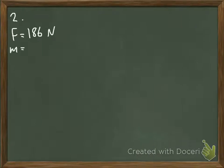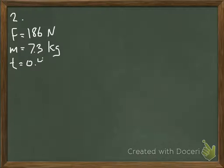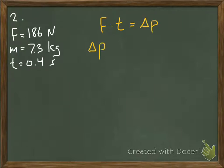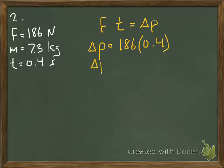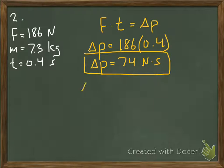Question number two. We are given the force that acts on a bowling ball, the mass of the bowling ball, and the time that it takes for the force to act on the bowling ball. The question is: what is the change in momentum? We can use a similar equation to question one, substituting MVF minus MVI for change in momentum, because that's the definition of change in momentum. Rearranging to solve for P on the left side, we can plug in our numbers and get the change in momentum.